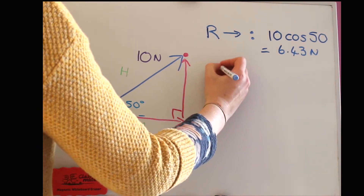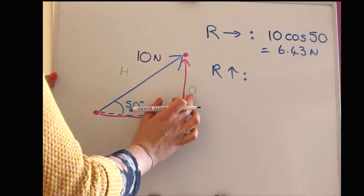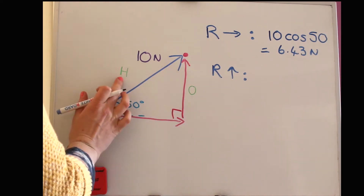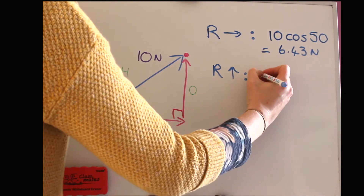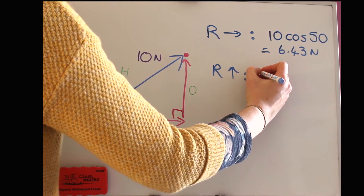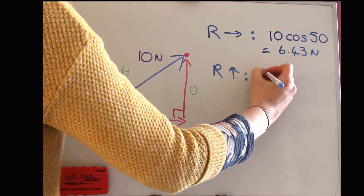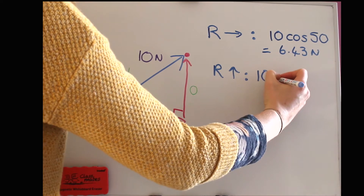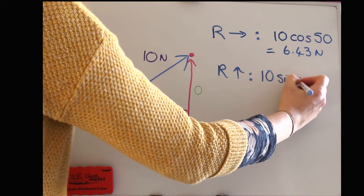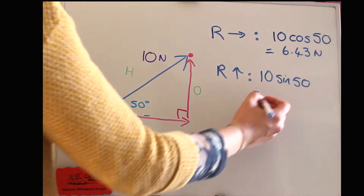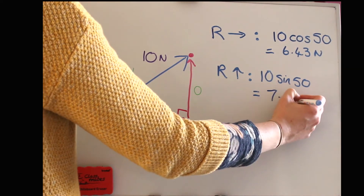Now resolving vertically: if we want this side, we've got opposite and hypotenuse, so that's using sine. Sine of the angle is opposite over hypotenuse, so rearranging we get 10 times sine of 50, and on the calculator I get 7.66 newtons.